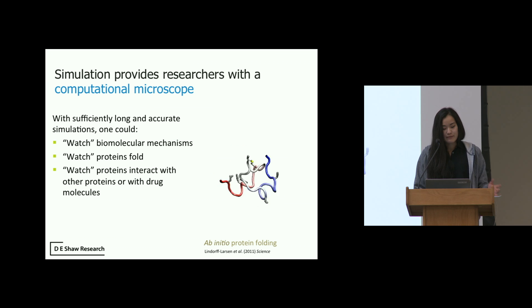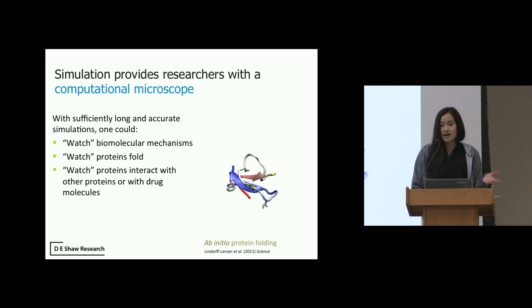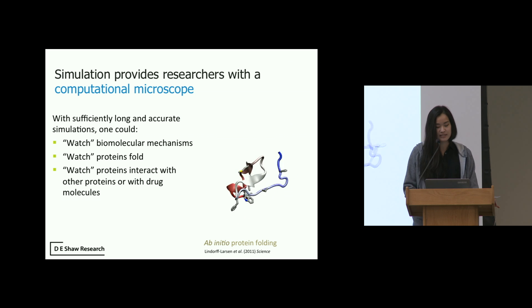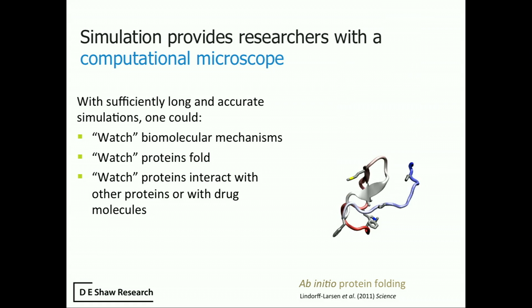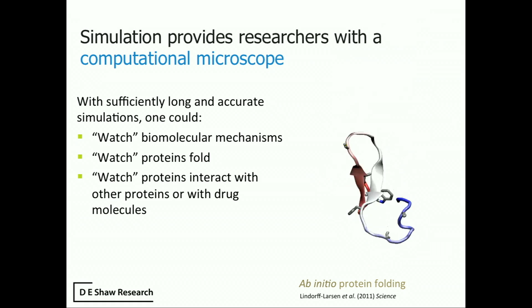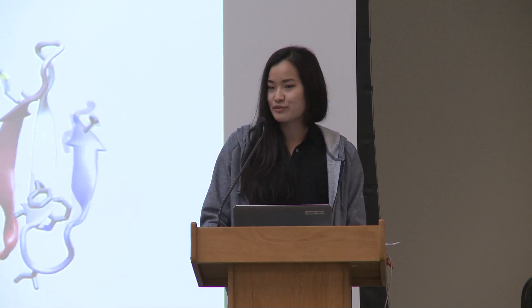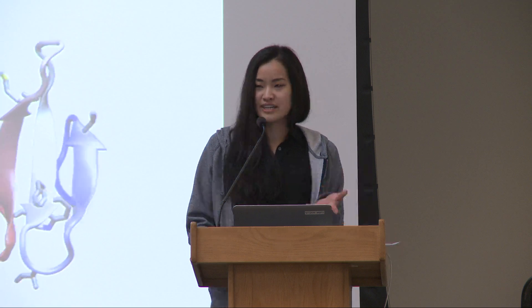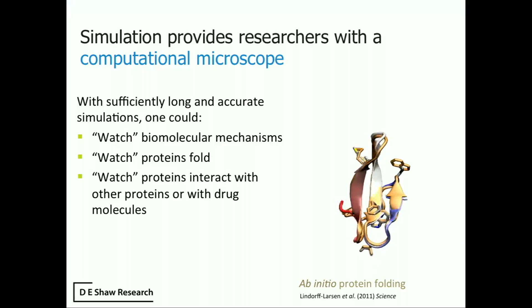The output of an MD simulation can be thought of as a computational microscope. With sufficiently long and accurate simulations, we can watch biomolecular mechanisms happen — watch proteins fold and unfold, as shown in the video on the right, and watch proteins interact with drug molecules. This is extremely useful to understand systems that may be hard or expensive to assess experimentally. For example, some processes may happen at time scales or spatial scales that are undetectable through experiment, or you may want to study a drug molecule that doesn't yet exist. On the right, in orange, we have the experimental structure of this protein, and we can verify and see the actual folding process happen.